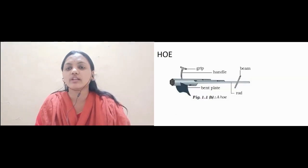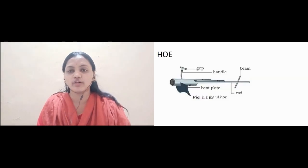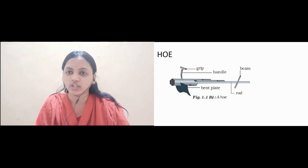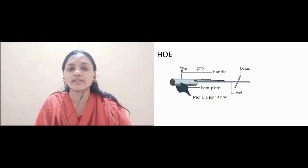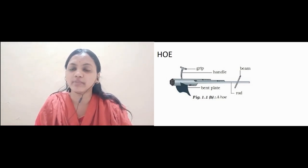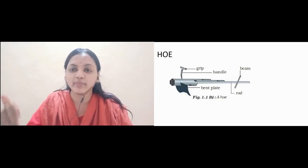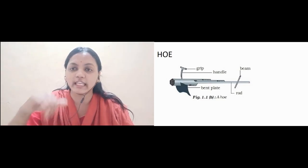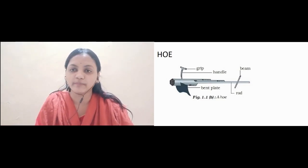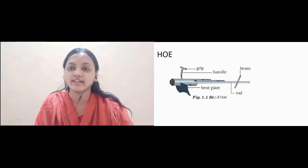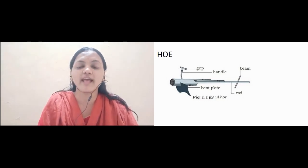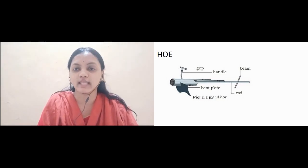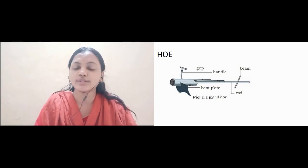Another equipment used in preparation of land is the hoe. This hoe is of metal body. It consists of a handle, grip, a scrapper plate which is used for digging, and a beam. This is another advanced equipment used in agriculture for preparation of soil.